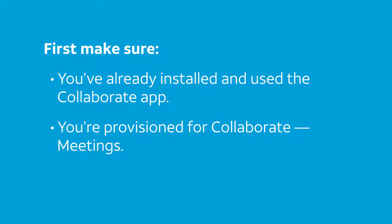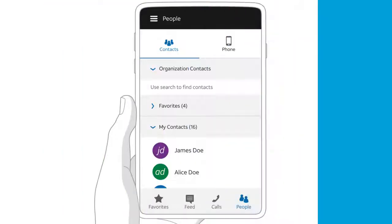If you don't know whether you're provisioned, click the main menu in the Collaborate app. If you see AT&T Collaborate Meetings, you're provisioned. Now let's get started.